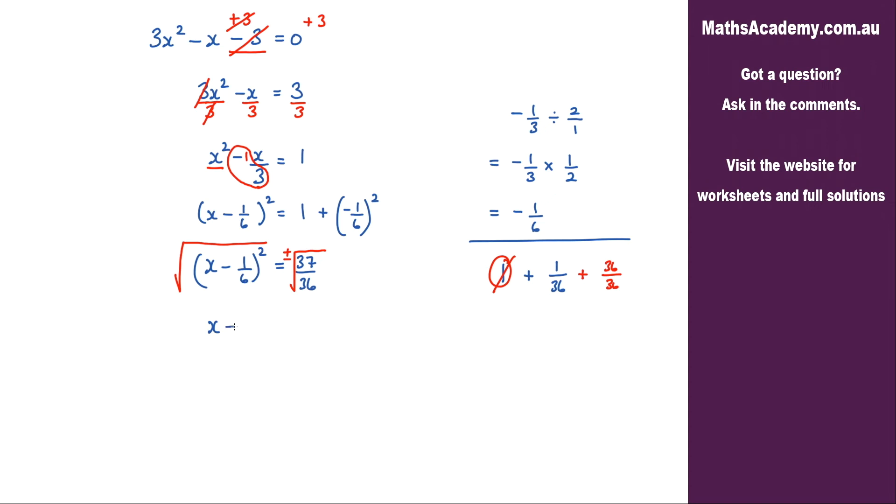Now on the left hand side the square and the square root will cancel. That will leave me with x minus 1 over 6 equals. And now on the right hand side, well the square root of 37 can't really do anything with that, but on the bottom here in the denominator I've got 36, and the square root of 36 is 6. So I've got plus or minus the square root of 37 over 6.